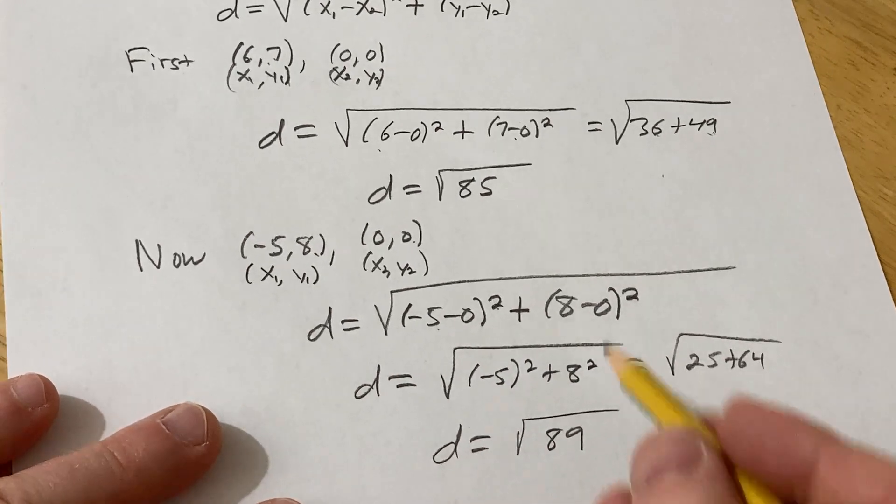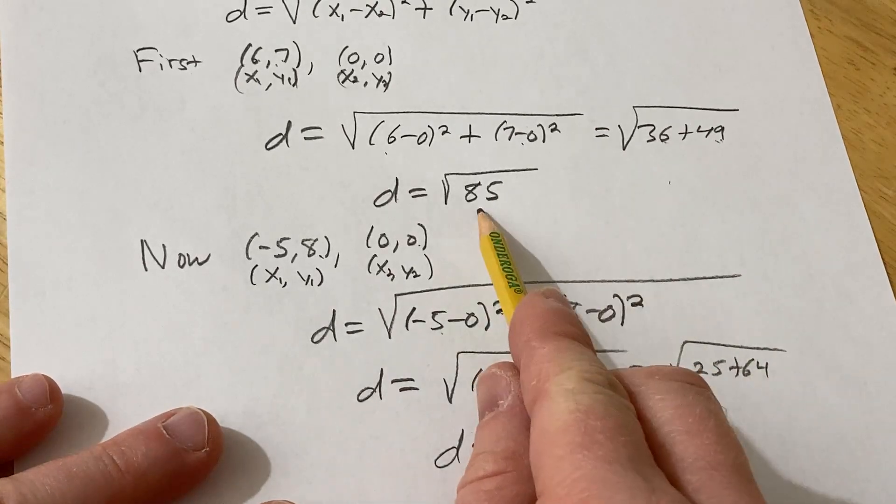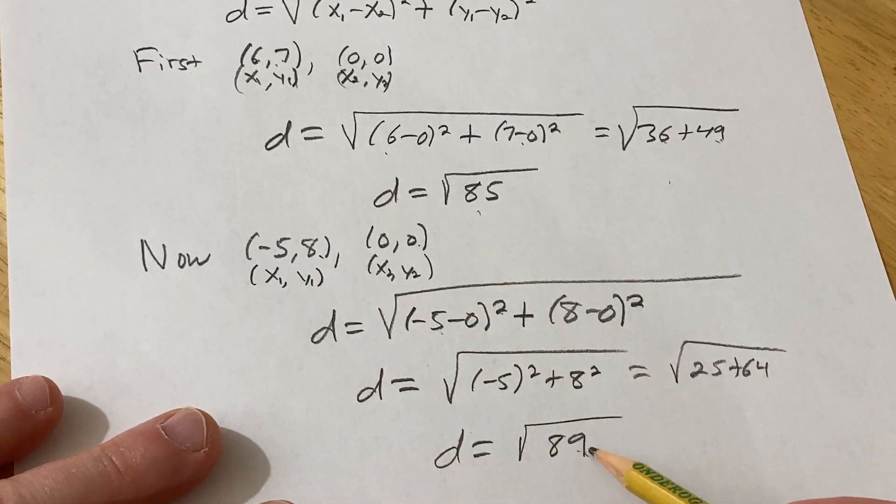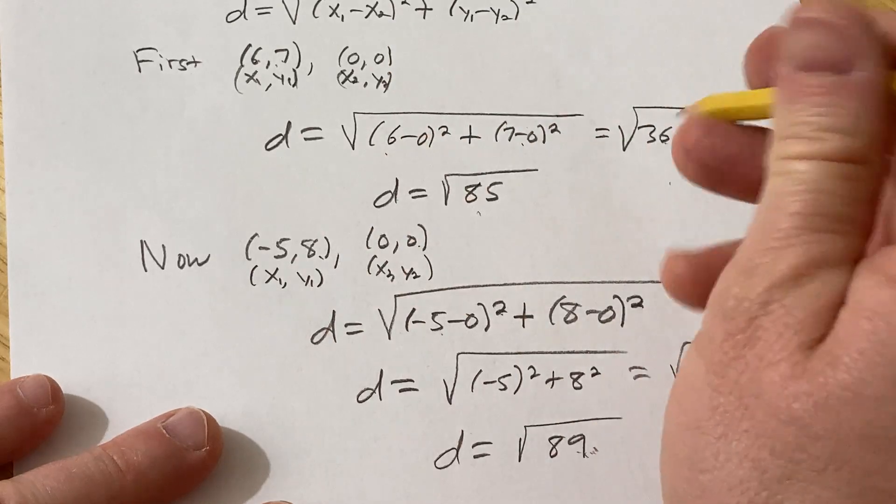Wow, these were pretty close in distance, right? So in this case, the square root of 85 is smaller than this, so the correct answer would be 6, 7.